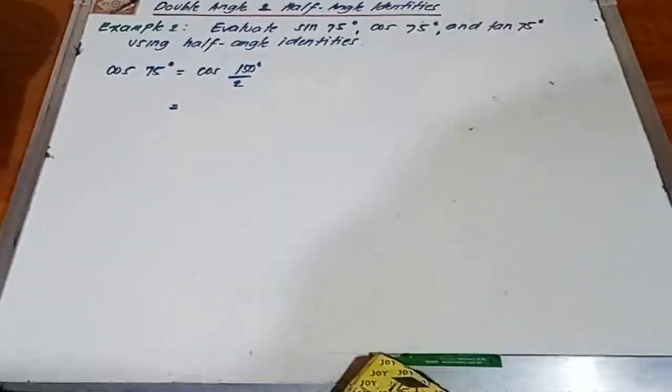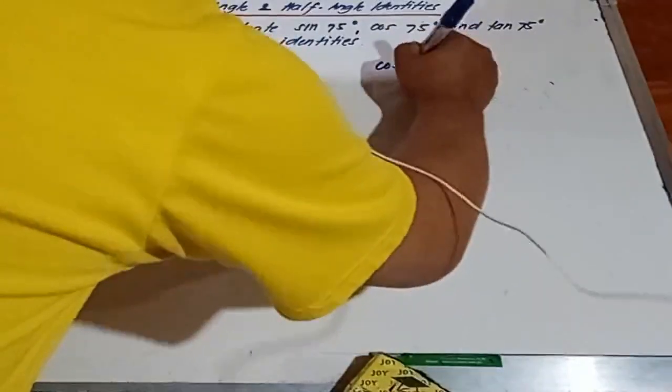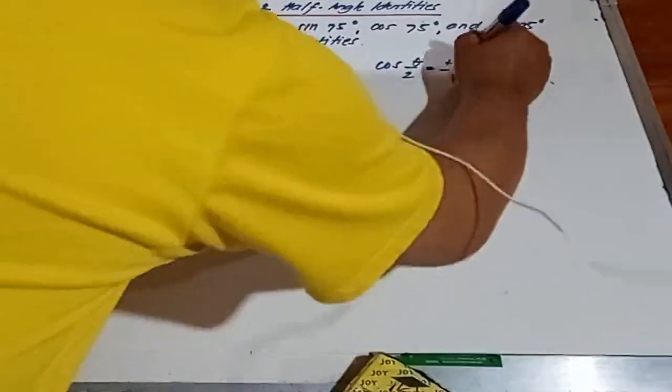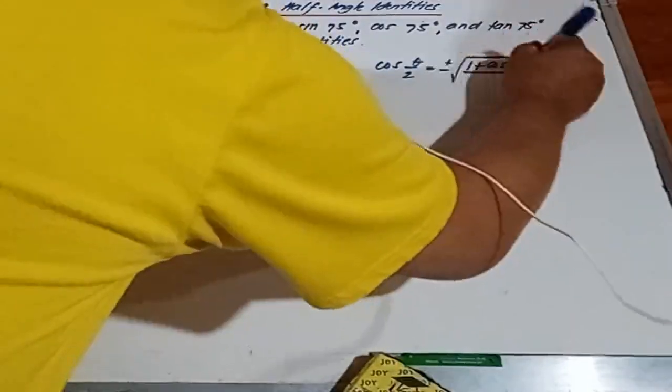The next step is we're going to apply the half-angle identity using this one. So we have cosine theta over 2 equal to plus or minus square root of 1 plus cosine theta over 2.